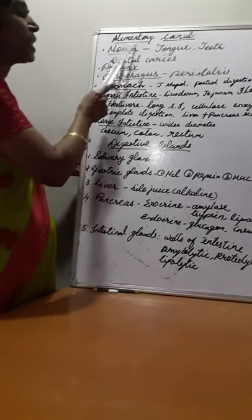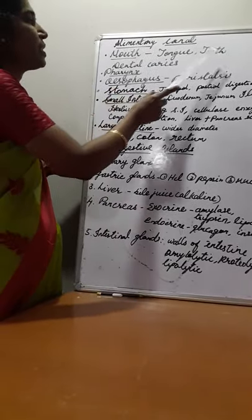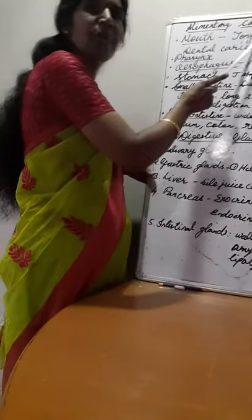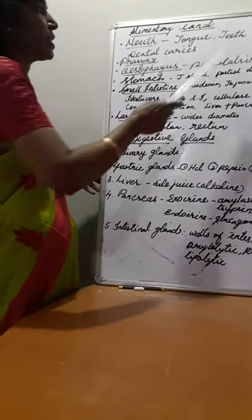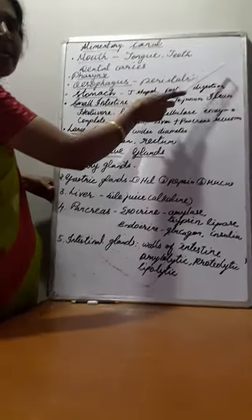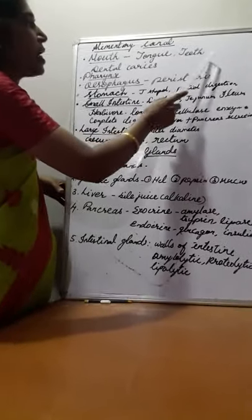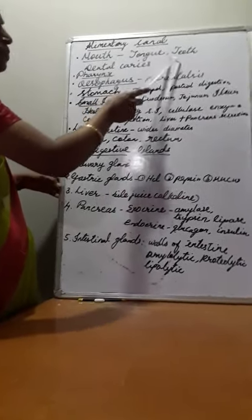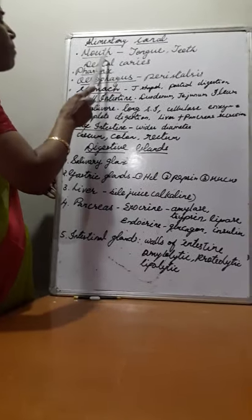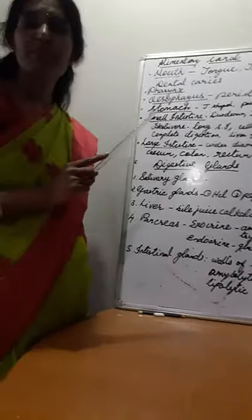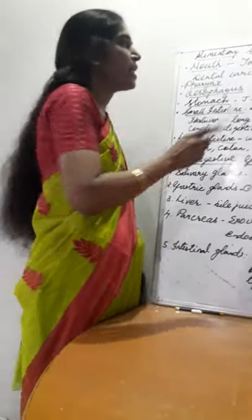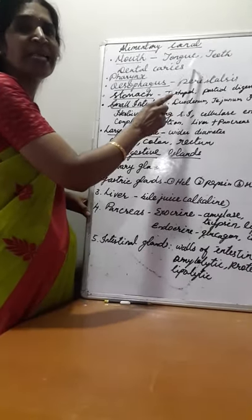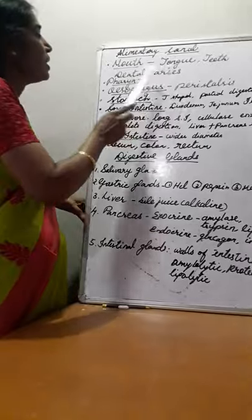To recap the alimentary canal: the mouth has tongue and teeth. The tongue has taste buds which help us taste food — whether it is salty, sour, sweet, etc. Teeth help in chewing, grinding, and both help in the digestion of food. In the mouth, salivary amylase is secreted by the salivary gland, which digests carbohydrates partially. So digestion starts in the mouth itself.